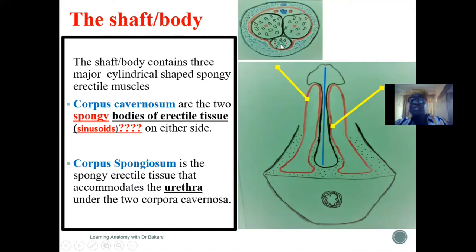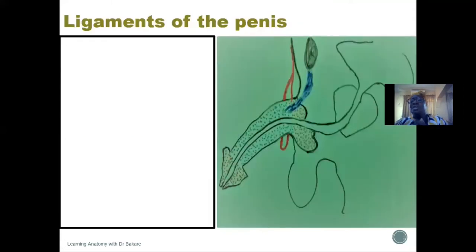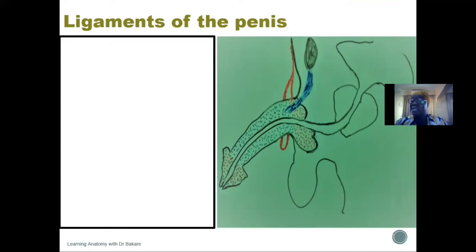An important feature of the corpus spongiosum is that it allows the passage of the spongy urethra — the terminal part of the urethra through which urine or semen passes. So this structure accommodates the penile urethra. Talking about the penis generally, structures in the body are held in place by ligaments, connecting them to neighboring structures so they are well placed. So let's look at the ligaments of the penis.